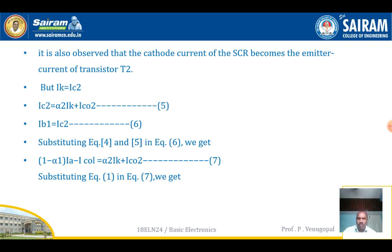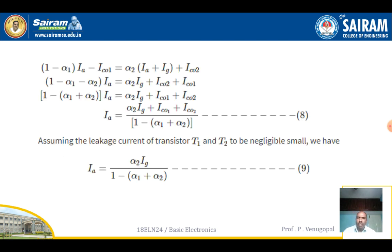Rearranging: (1 − α1 − α2)·IA = α2·IG + ICO1 + ICO2. Therefore IA = (α2·IG + ICO1 + ICO2) / (1 − (α1 + α2)). Assuming the leakage currents ICO1 and ICO2 are negligibly small, the expression simplifies to: IA = α2·IG / (1 − (α1 + α2)). This expression is very important for the two-transistor analogy of the SCR.